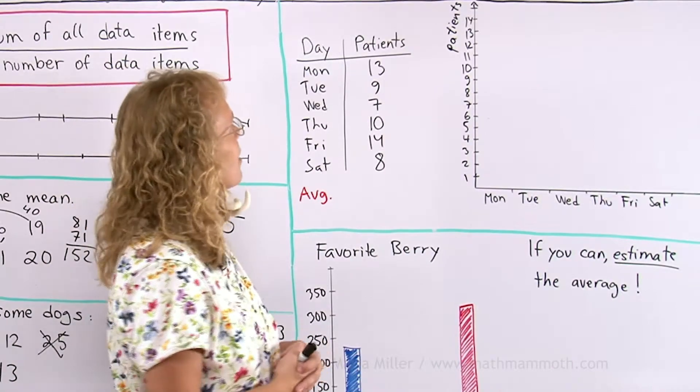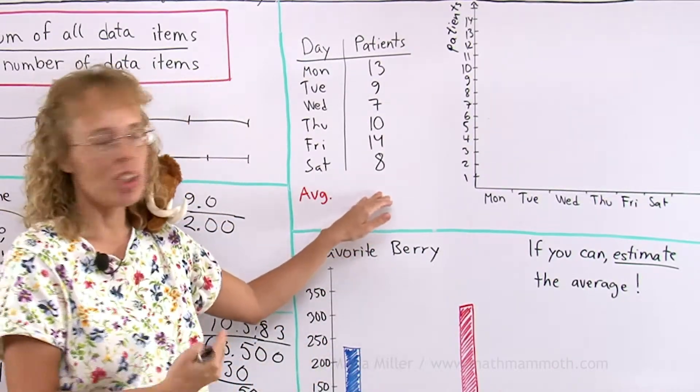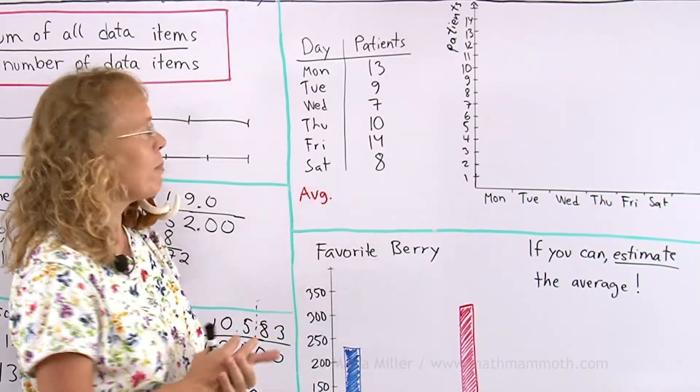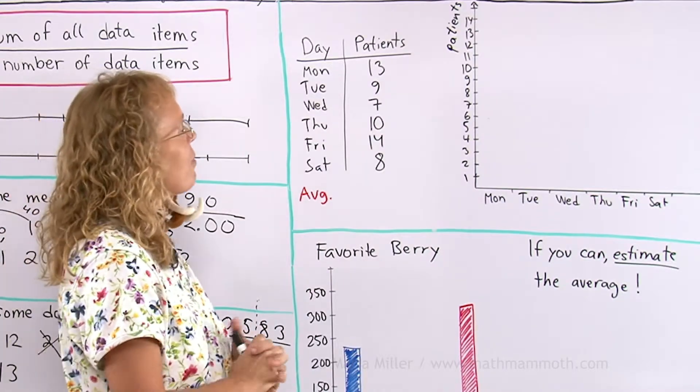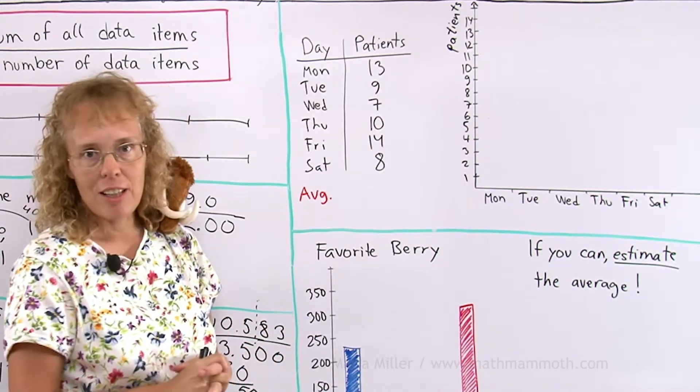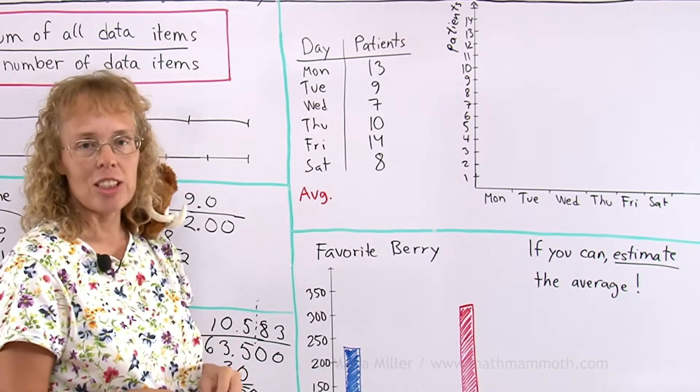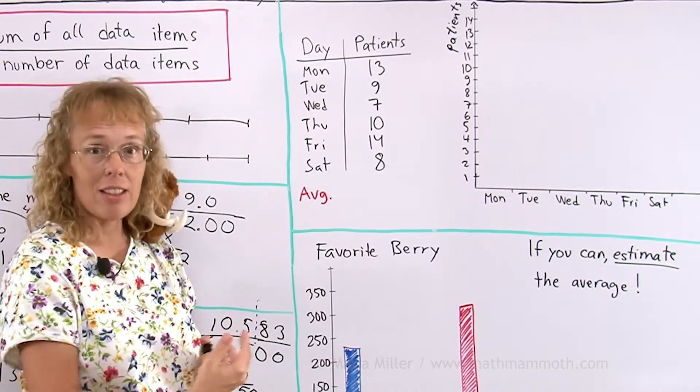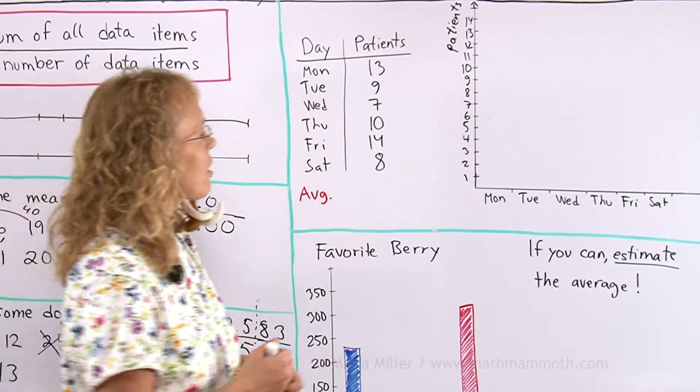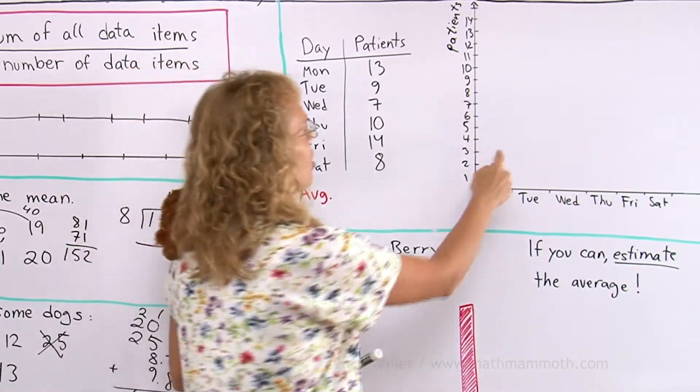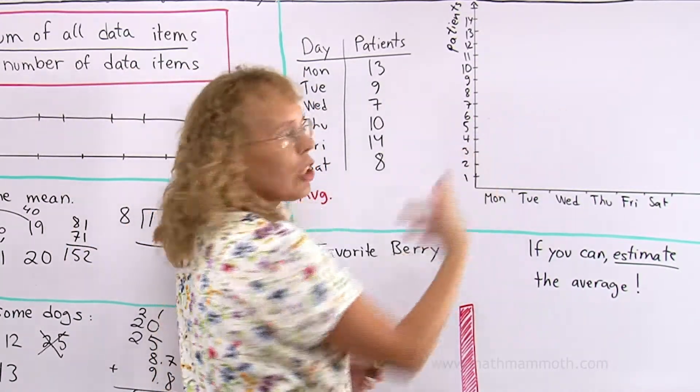Now, here, maybe this is a doctor's office. How many patients did this doctor have? He kept track. And we're going to make a line graph out of this and then calculate the average and see how we can plot that in the line graph. Let me first make the line graph. You remember that I will put a dot for each of these. Then connect them with lines.